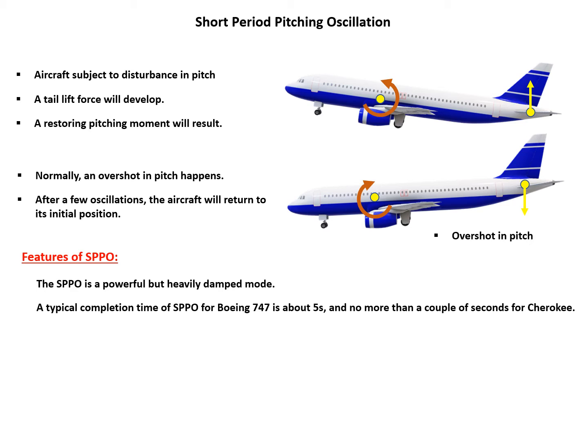And no more than a couple of seconds for the Cherokee. So you can see there are different types of aircraft. One is very big, the other is small. But for both aircraft, the typical period is quite small. So that's why we call it short-period pitching oscillation. And the damping coefficient is usually required between 0.35 and 1.3. So it's a heavily damped motion.